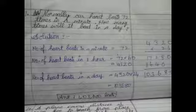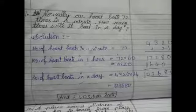72 multiply by 60, we will get 4320. So again 4320 multiply by 24 is 103,680. So one day the heart beats 103,680 beats.